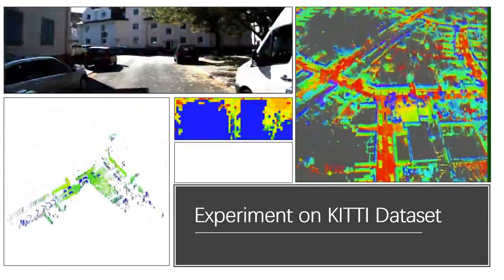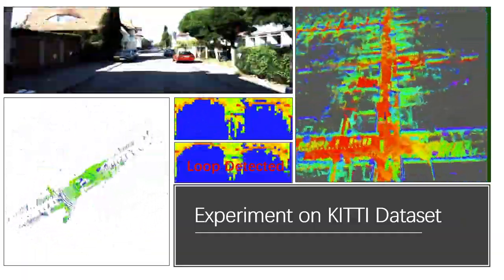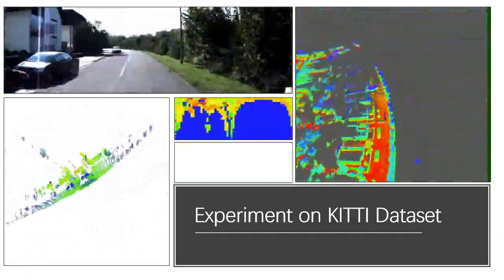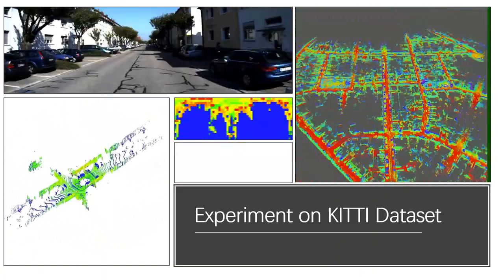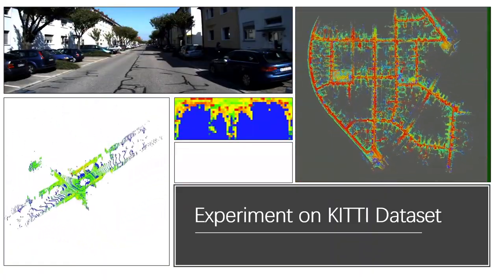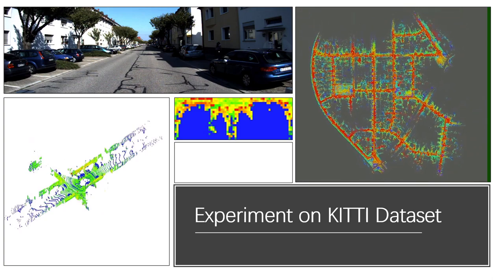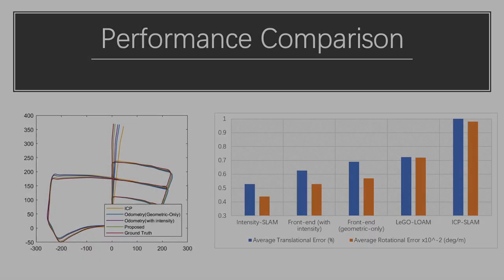the average translational error is reduced by 11.3% and the average rotational error is reduced by 7.5%. Our method also achieves higher localization accuracy compared to other state-of-the-art LiDAR SLAM methods such as ICP SLAM and LEGO-LOAM.